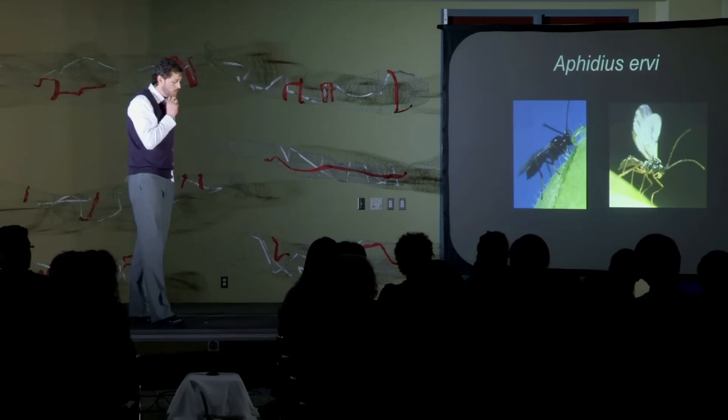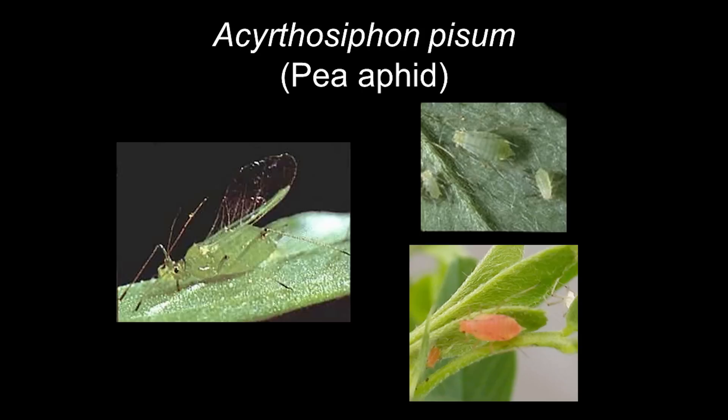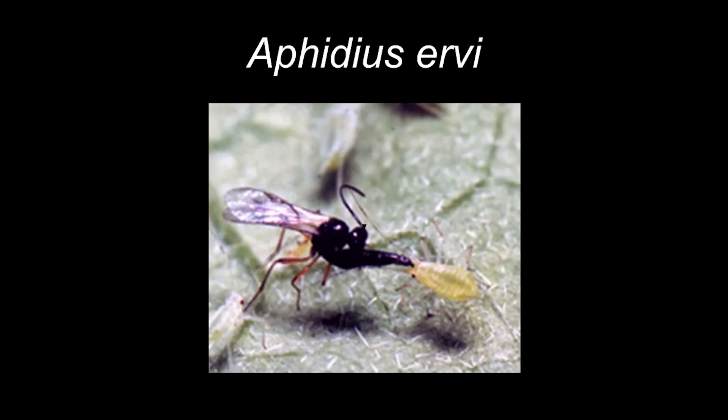So back to my favorite animal on the planet, Aphidius ervi. She, this lovely little lady here, is a parasitic wasp. She parasitizes aphids, particularly something we call the pea aphid, which is a pest in agricultural fields.